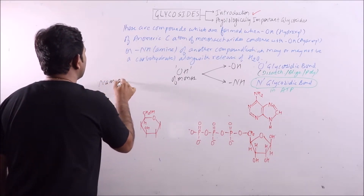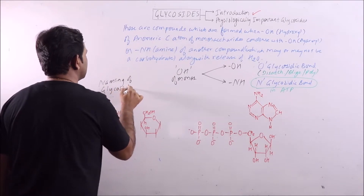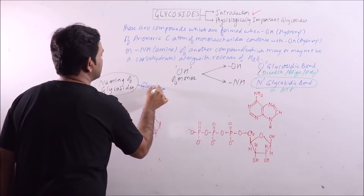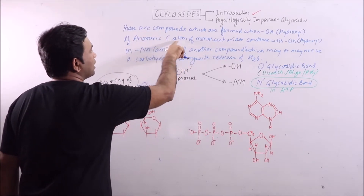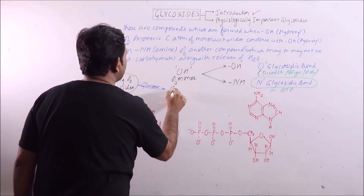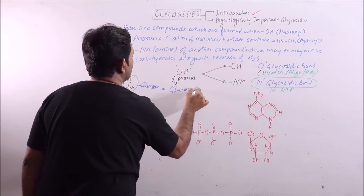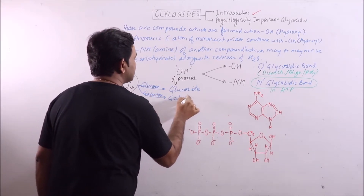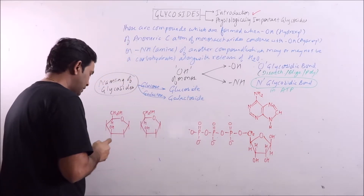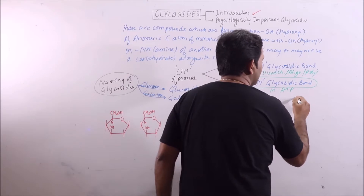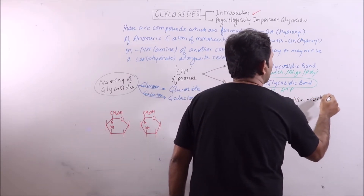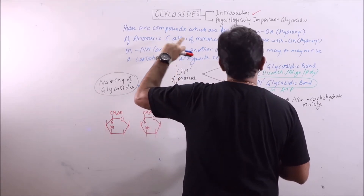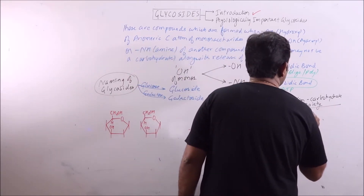Naming of glycosides is easy. If you are taking the anomeric carbon OH of a monosaccharide — if this monosaccharide is glucose then it will be termed as glucoside, and if it is galactose it will be termed as galactoside. It is important to note that the non-carbohydrate moiety that combines with the hydroxyl group of the anomeric carbon is known as aglycone.